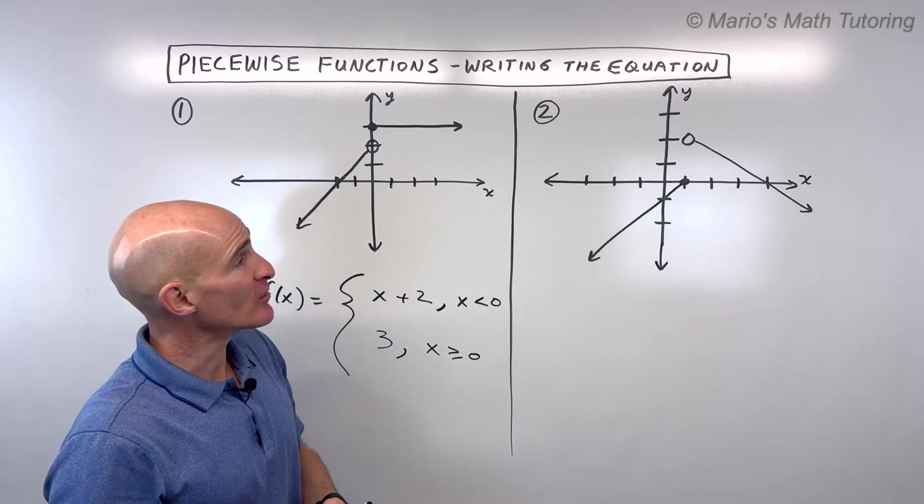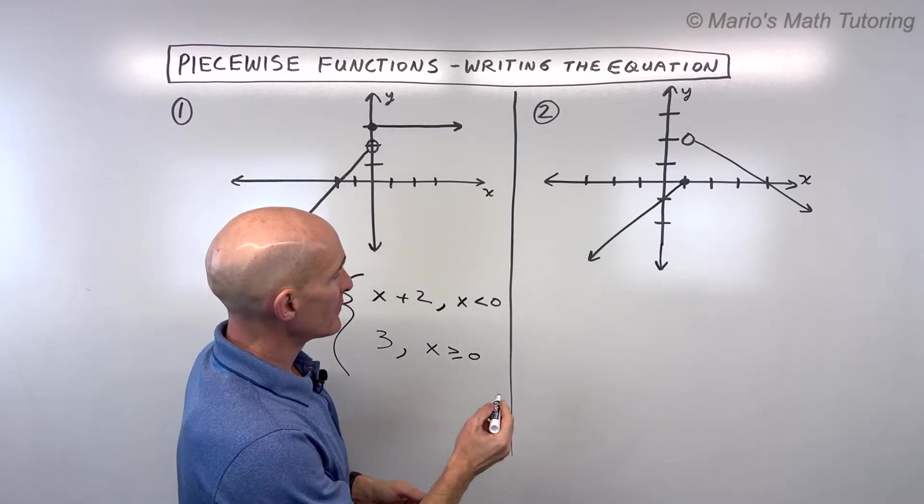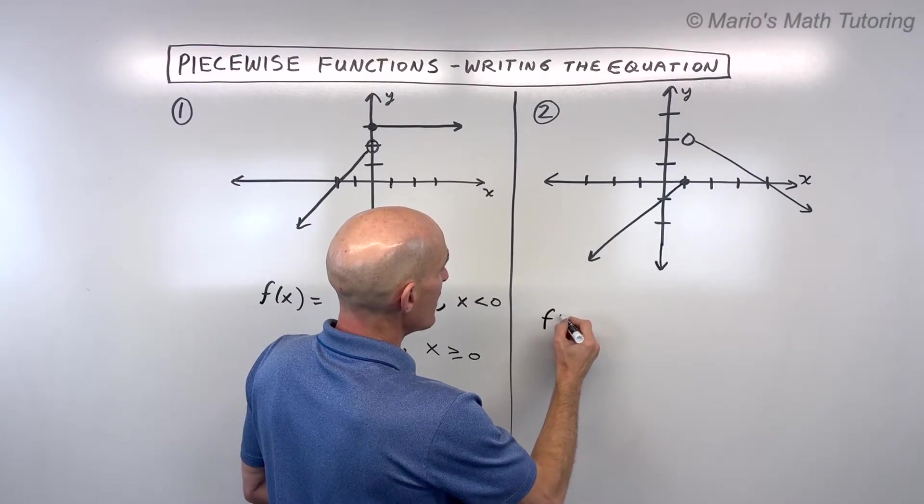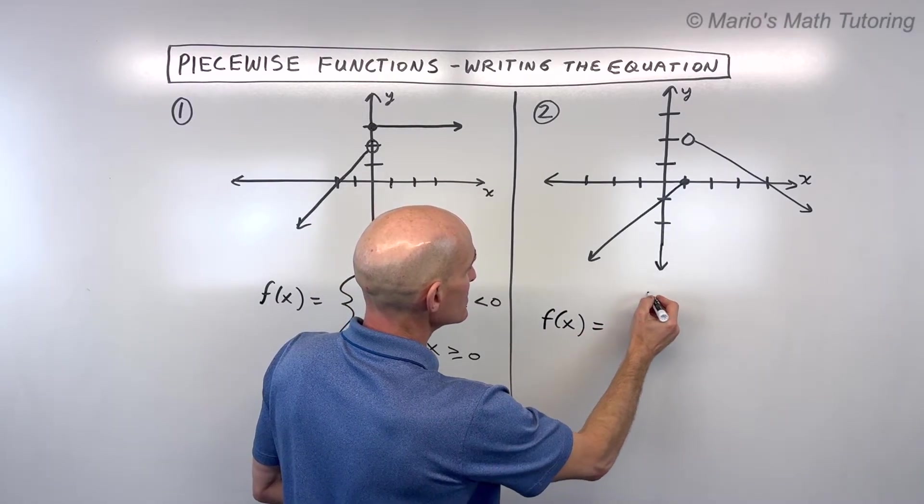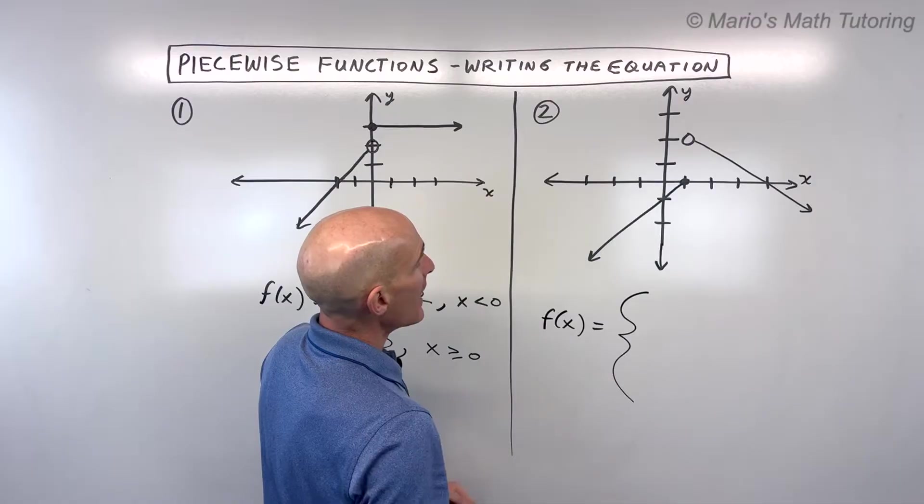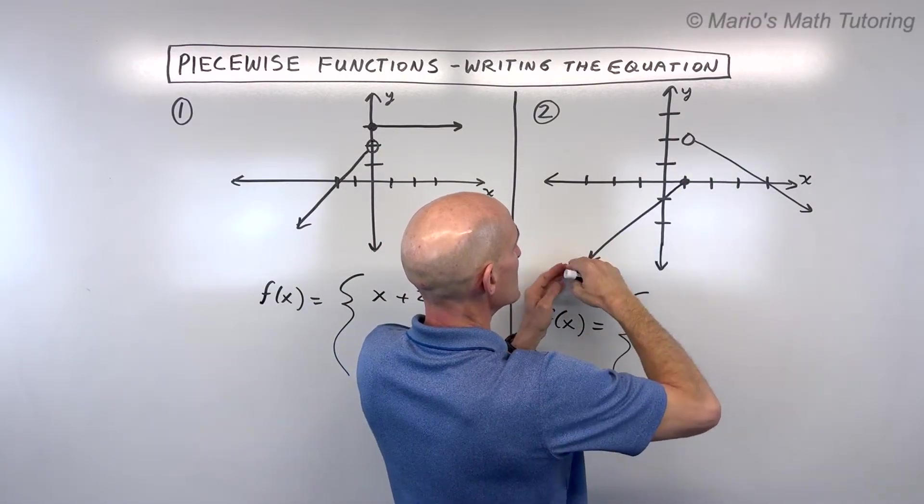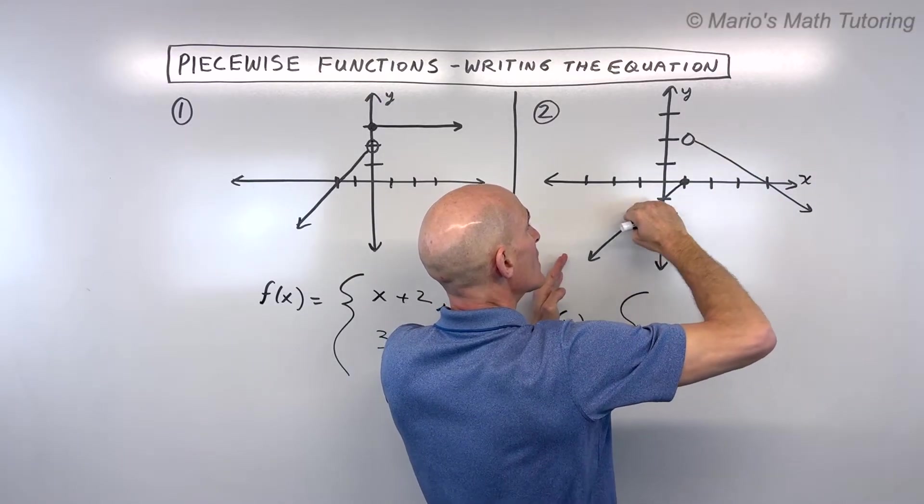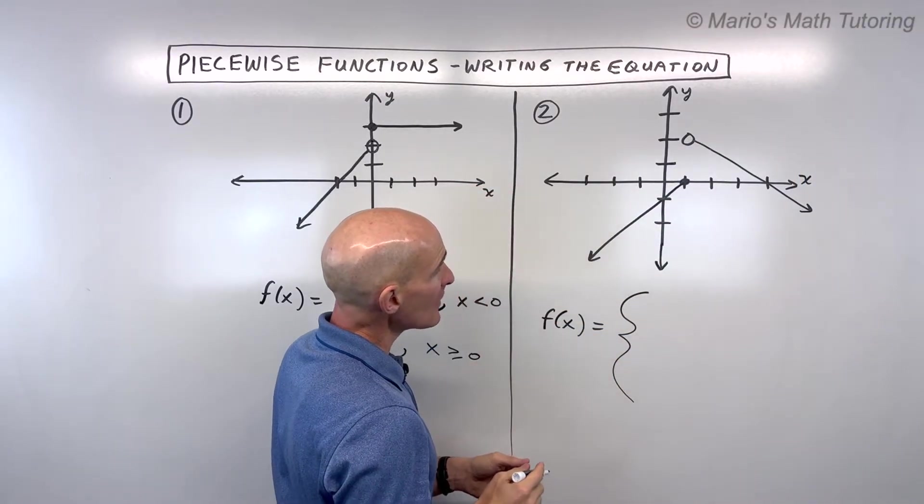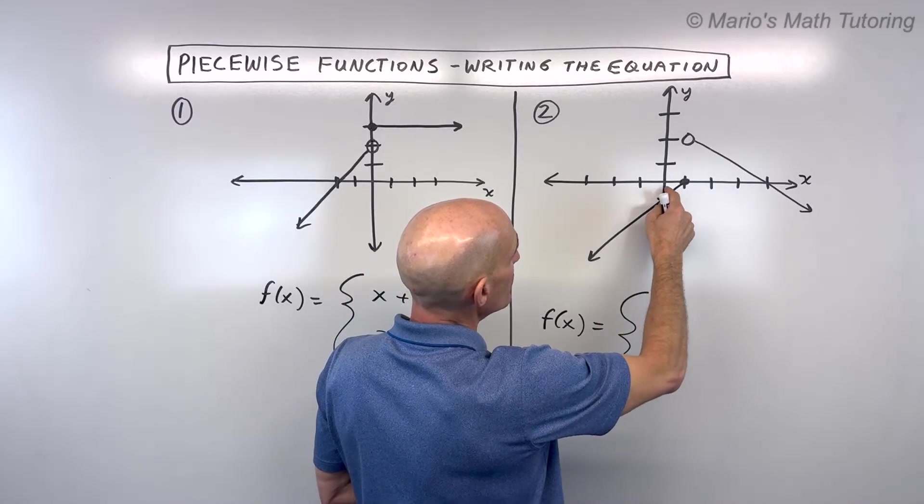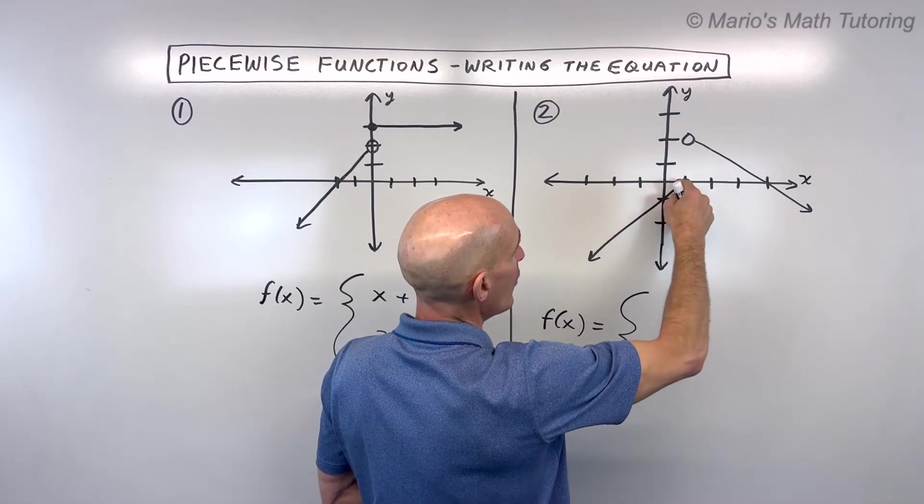Let's look at another example, number two here. So what do you think for this one? Well, let's start off by saying f(x) equals. Let's make a bracket here. I like to work from left to right, and I can see that this line here, if it was a continuous line, what would be the equation? Well, I can see it has a slope of rise 1 run 1, so that's a slope of 1, and it has a y-intercept of negative 1.